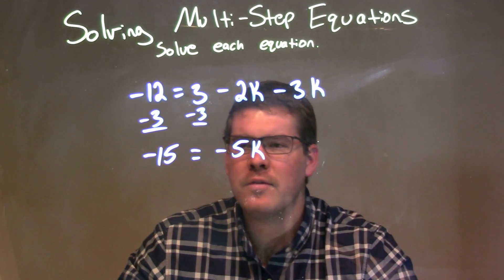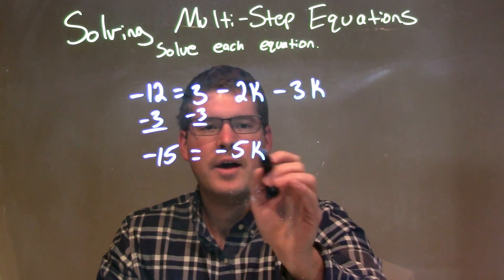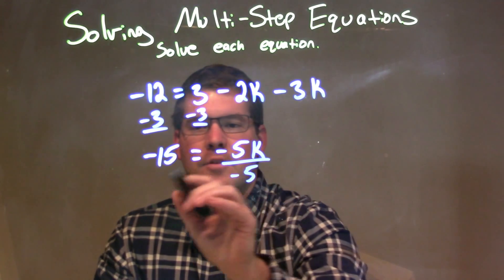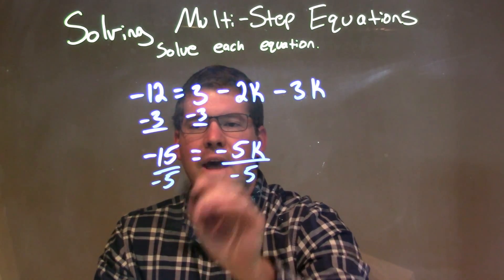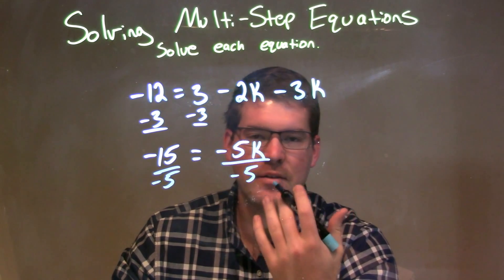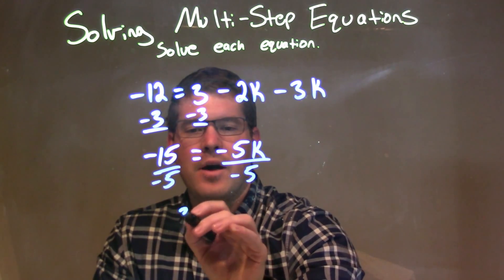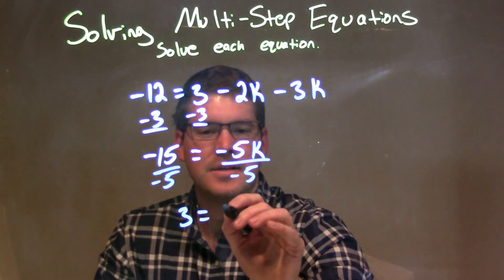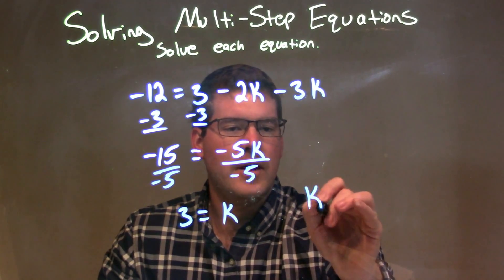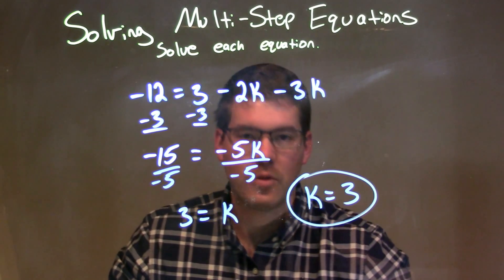So we have negative 5k. Now we have multiplication between negative 5 and k, so the opposite of multiplication is division — I'm going to divide by negative 5 on both sides. Negative 15 divided by negative 5: a negative divided by a negative is a positive, and 15 divided by 5 is 3, so we have positive 3. We're just left with k on the right. So our final answer is k equals 3.